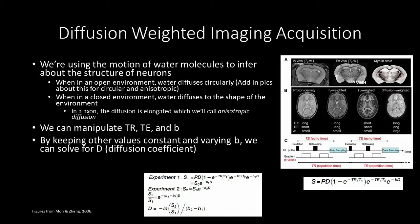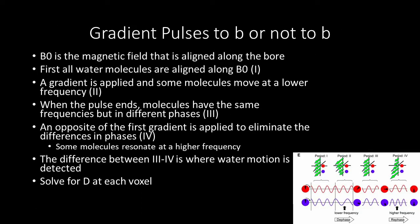How do we tease out these differences in diffusion? We can manipulate the temporal resolution of MRI, the echo time, and B gradients. By keeping the temporal resolution and echo time constant, we can vary the B gradient and solve for D diffusion in the equation on the screen. The B0 is the magnetic field aligned along the bore of the MRI, which all water molecules are aligned to. A gradient is applied and some molecules move at a lower frequency; when it ends, all the water molecules have the same frequencies but in different phases. The opposite of the first gradient is then applied to eliminate the phase differences, causing some molecules to resonate at higher frequencies. The difference between when the first gradient pulse ends and when the second gradient pulse is applied is how we measure water diffusivity. This is the purpose of the B gradient.